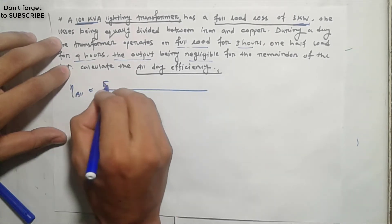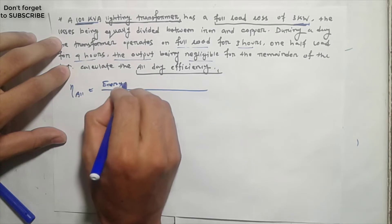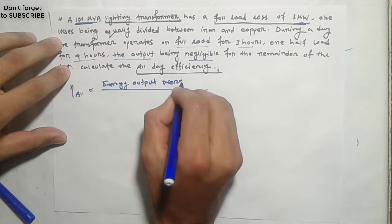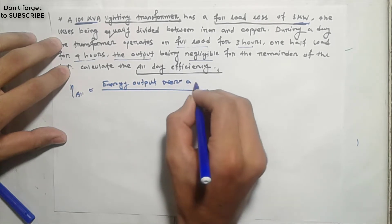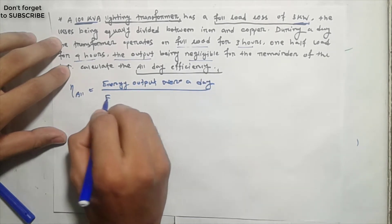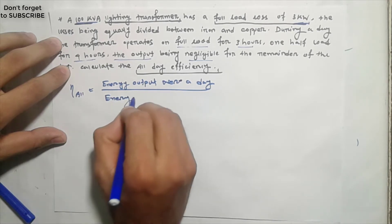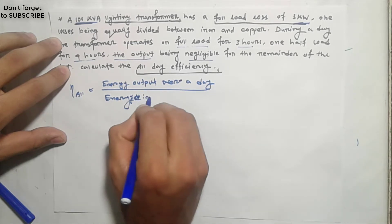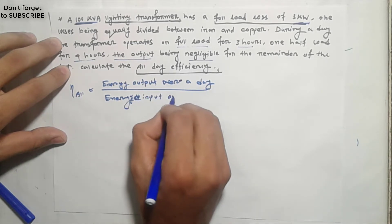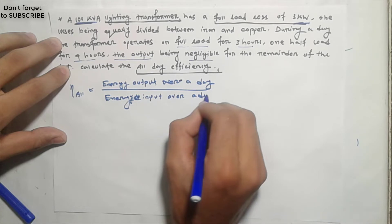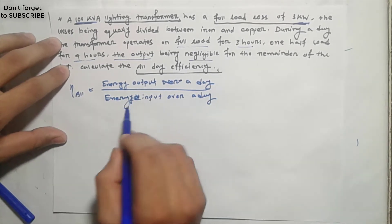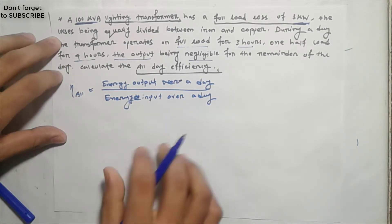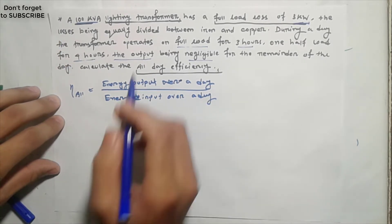We need to find the energy output over a day. The all-day efficiency formula is: energy output over a day divided by energy output over a day plus losses.